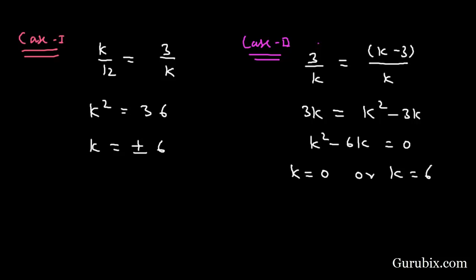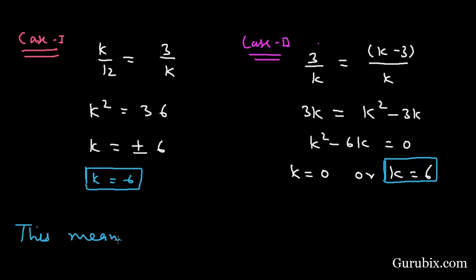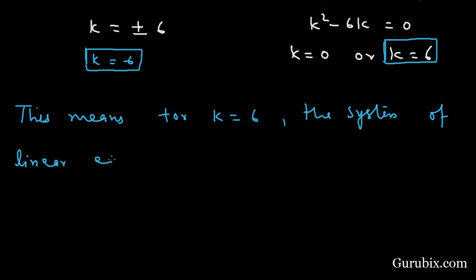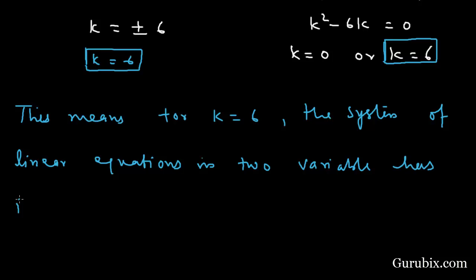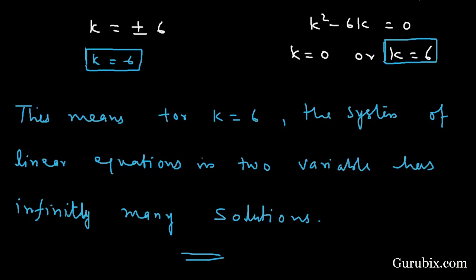Now we observe that in both conditions, the common value satisfied is k = 6. Therefore, for k = 6, the system of linear equations in two variables has infinitely many solutions. This is the solution of the example. Thank you.